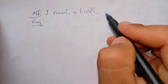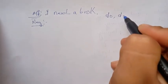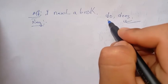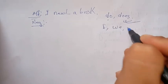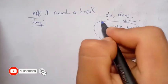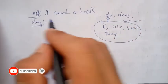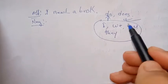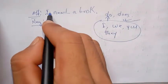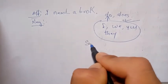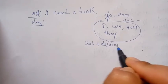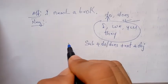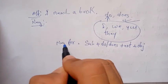Negative sentence: the subject takes 'do' or 'does.' The negative formation is: subject + do/does + not + object. This is the present indefinite tense negative formation.